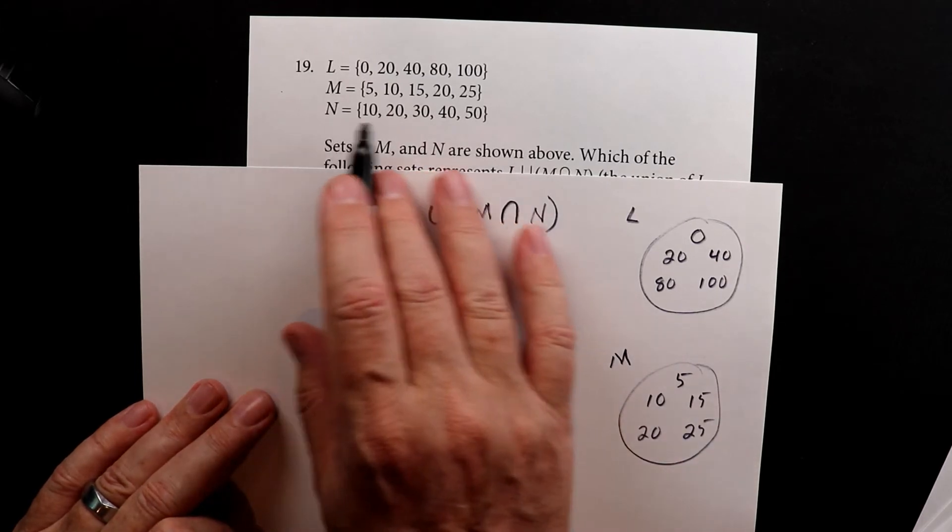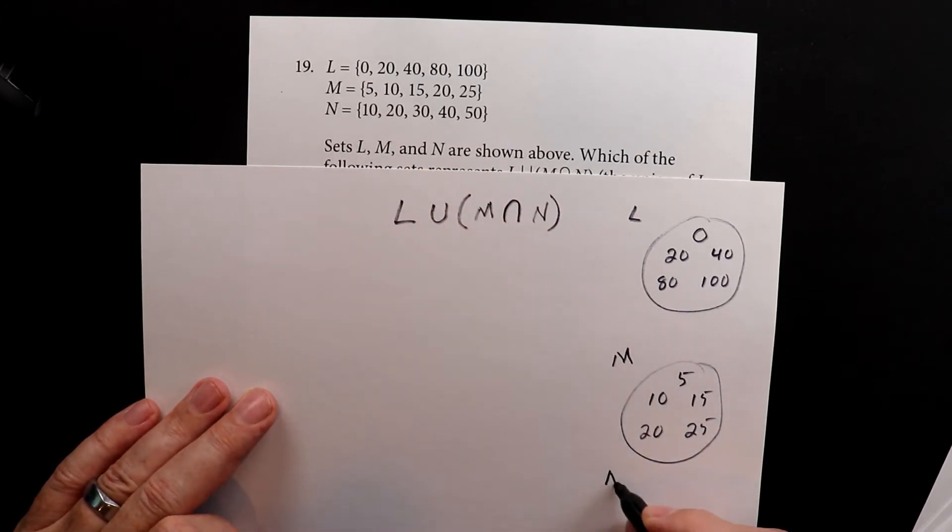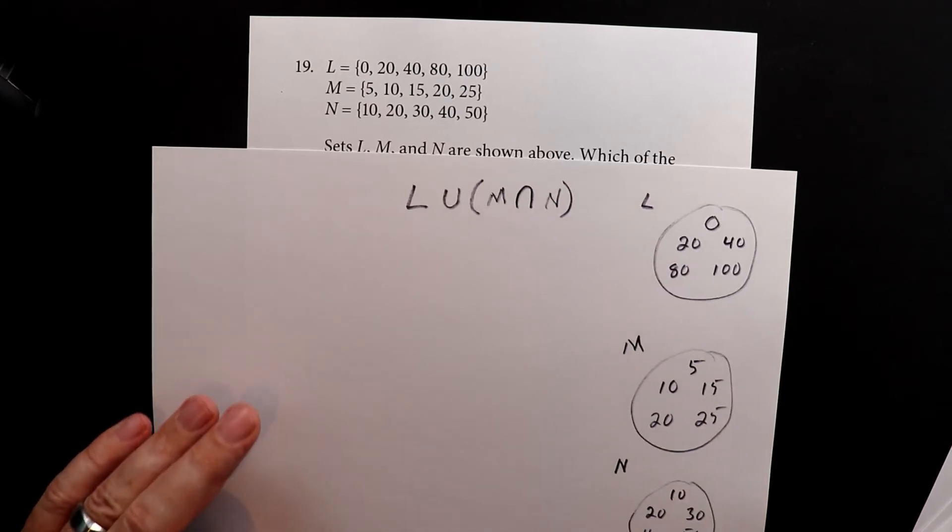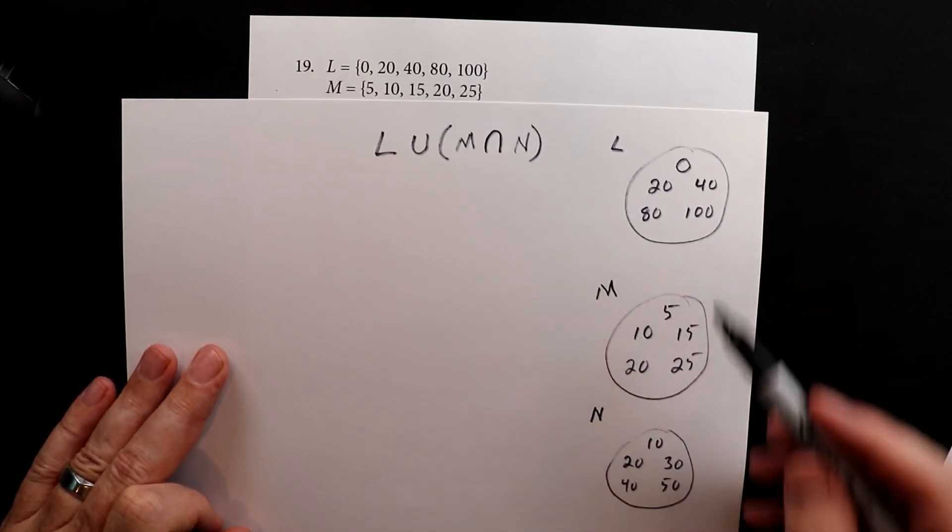And then set N is 10, 20, 30, 40, and 50. So here's the three sets.